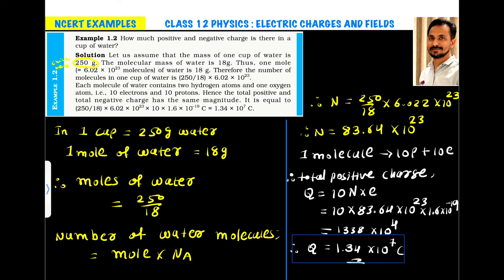So 1.34 × 10⁷ coulombs of positive charge is contained in 250 grams — one cup — of water. Since water is electrically neutral, the number of protons equals the number of electrons. Therefore, the total positive charge and total negative charge are both equal to 1.34 × 10⁷ coulombs.